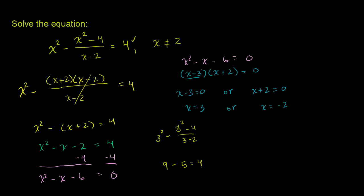Now let's try it with negative 2. If I take negative 2 squared, and I have a minus (negative 2 squared minus 4), all of that over (negative 2 minus 2). Negative 2 squared is 4 minus (4 minus 4), all of that over negative 4. Well, 4 minus 4 is 0, so this whole thing is just going to become 0. So this whole thing is going to equal 4.